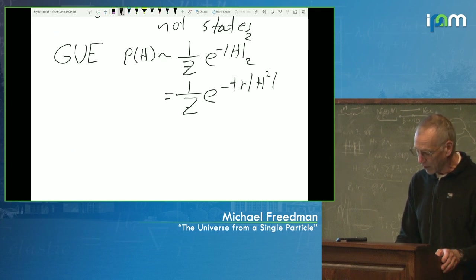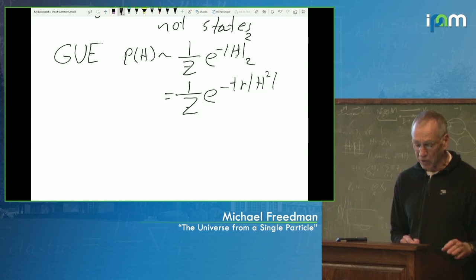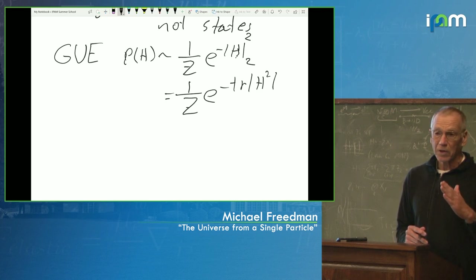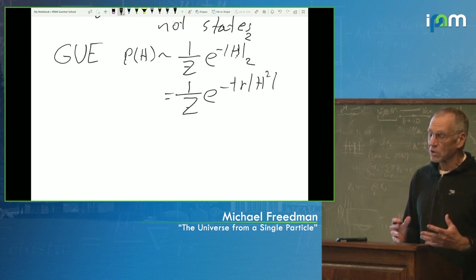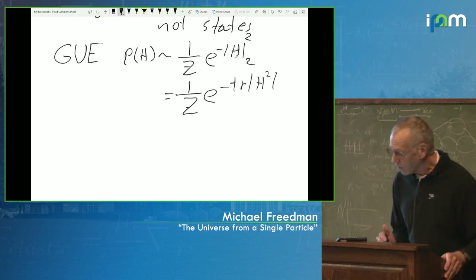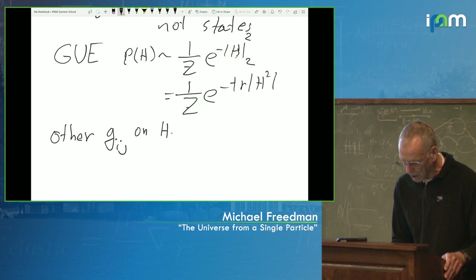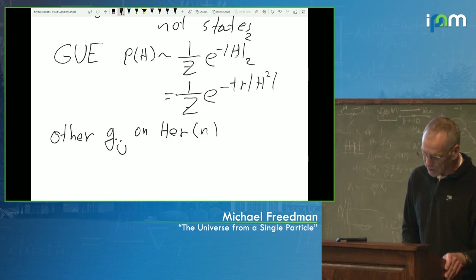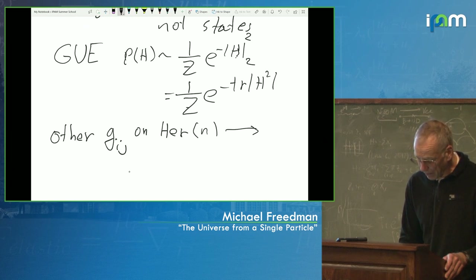The GUE does not know anything about interacting physics. It's the undifferentiated template for Hamiltonians, and it's based on a metric — I call it the L2 metric — which is a very symmetrical metric, the round metric: it assigns a length to the Hamiltonian as the square root of the sum of the squares of its entries. But there are other geometries possible, other metrics G_ij on the space of Hamiltonians. Other metrics on this vector space will lead to other probability distributions based on G.